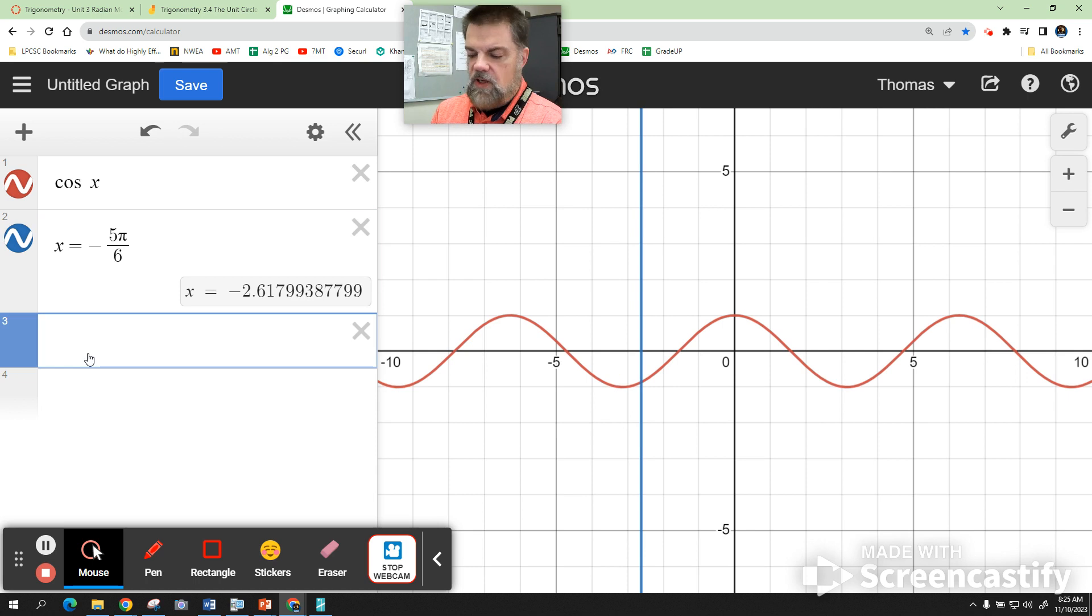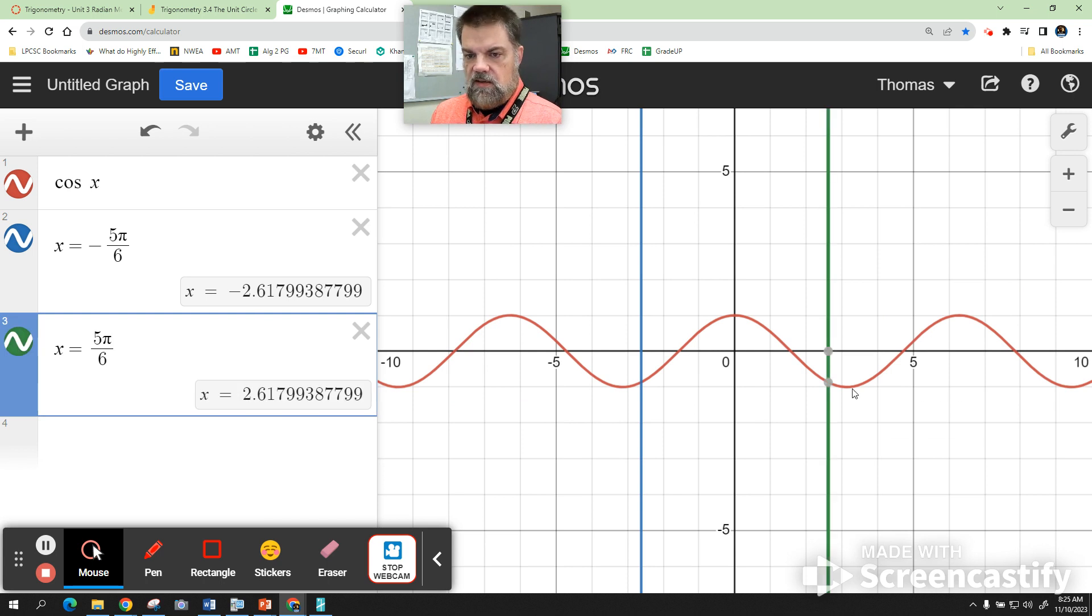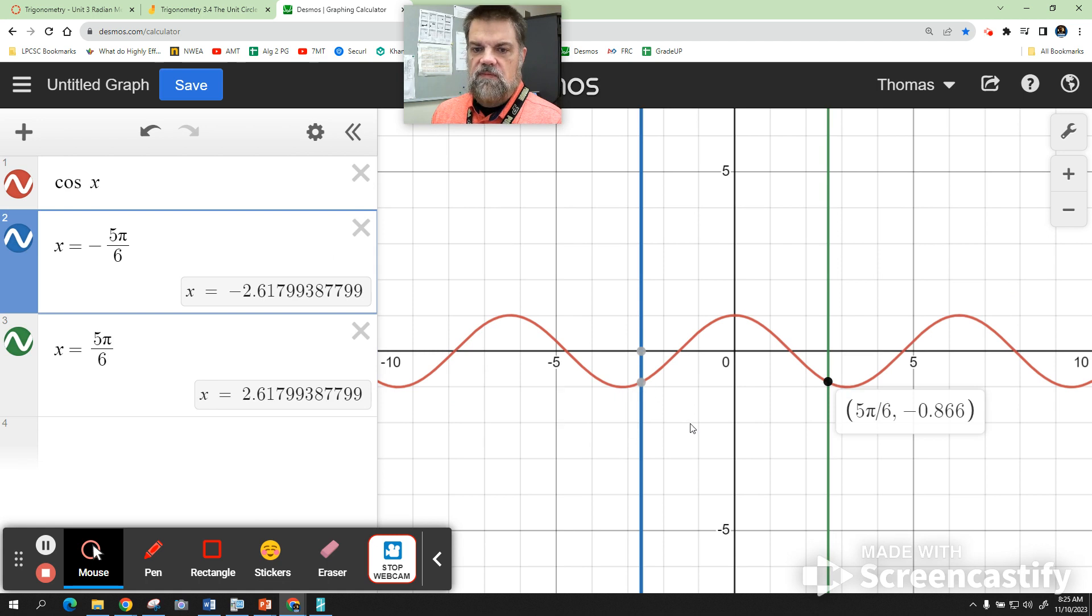So if I do the positive of that, 5 pi divided by 6, I'm going to get the same value. That's it.